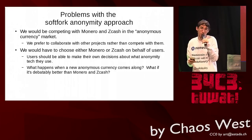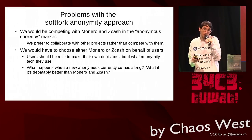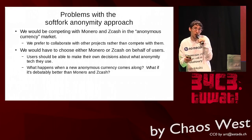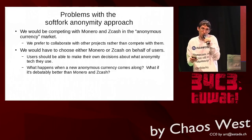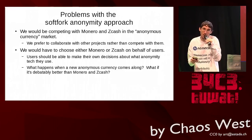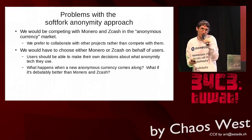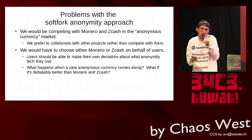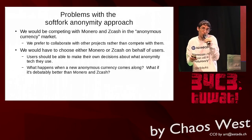So what are some problems with the idea of having Namecoin soft fork to add anonymity to the consensus rules? Well, for one thing this would actually put us in competition with Zcash and Monero and every other anonymous currency, because users who use Bitcoin but want better anonymity might be tempted to move to Namecoin. Monero and Zcash are doing their thing reasonably well — we don't really want to start getting into a situation where they would consider us competitors, or that we would consider them competitors.